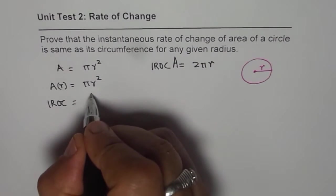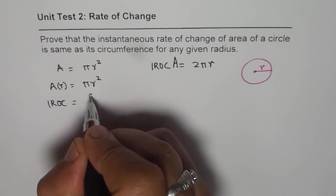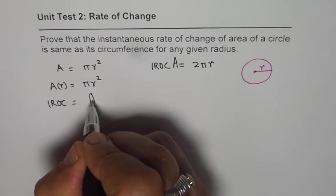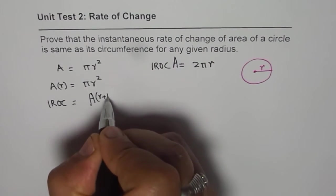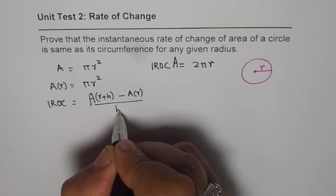In that case, it will be f of, let me write, because the function is a, so we will write a of r plus h minus a of r, divided by h.